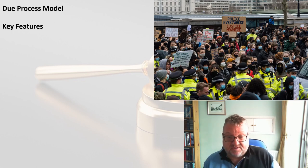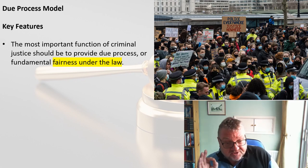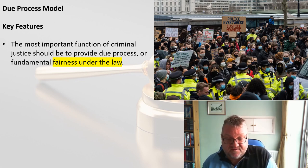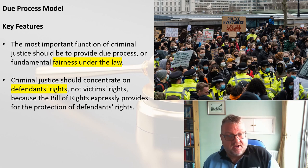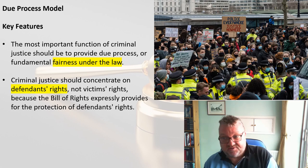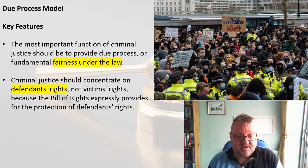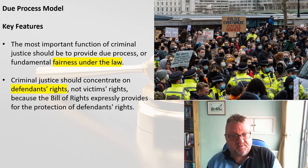The due process model is poles apart from crime control. Under the due process model, the most important function of criminal justice is to provide due process — a correct process, fundamental fairness under the law — so that innocent people do not get locked up. The criminal justice system should concentrate on the rights of the defendant, not the victim. Packer was writing in America and refers to the Bill of Rights, which expressly provides for the protection of defendants' rights. Defendants are the priority.